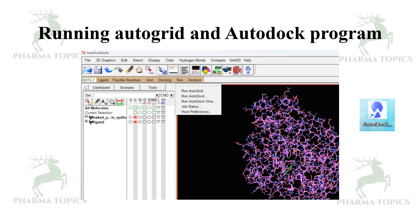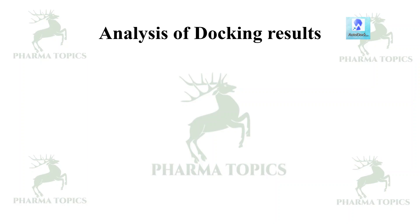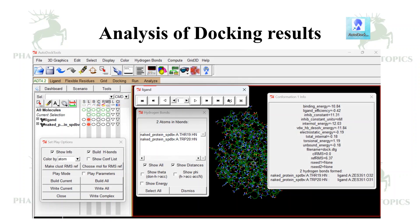Then we will be running AutoDock and AutoGrid. There is a Run tab where we will be using AutoDock and AutoGrid. First AutoGrid will be run, then AutoDock. We will be analyzing the results using the Analyze tab. So we can see the poses, the binding energy, and the interaction residues. You can also save this file.